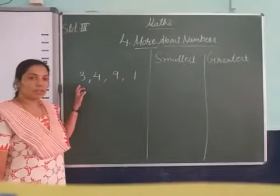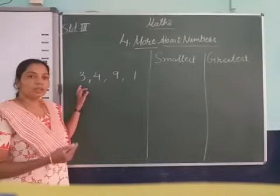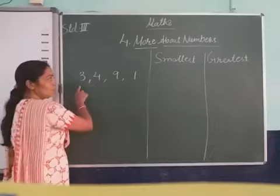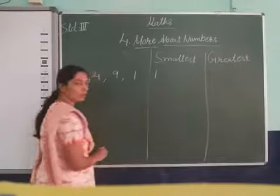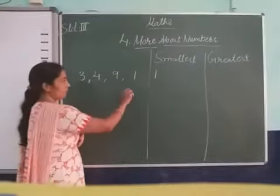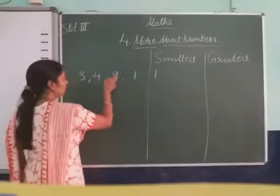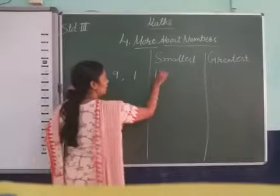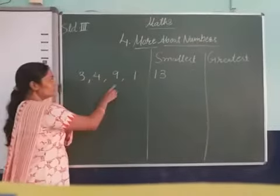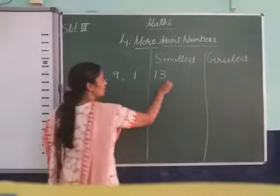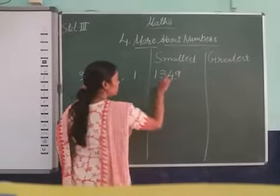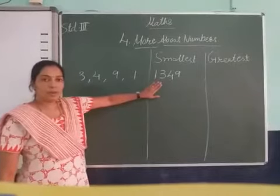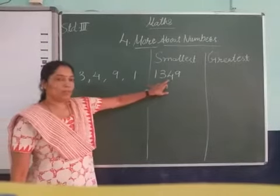Our condition to identify the smallest number is we put the smallest digit first, on the left side. So 1 goes first, then the next smallest out of 3, 4, 9 is 3. Then 4 and 9 — 4 is smaller than 9. So using these digits, we write the smallest number: 1, 3, 4, 9.